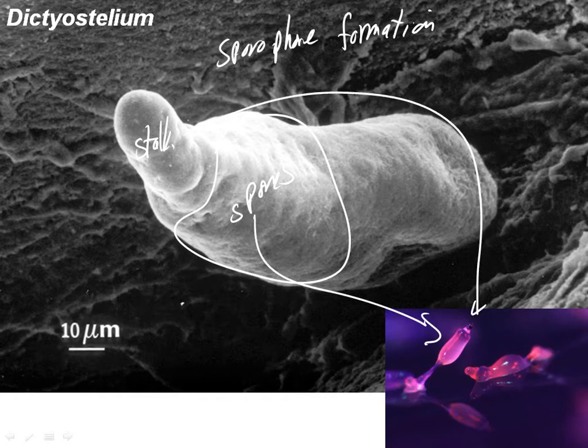And you kind of get the sense that those spores are kind of almost climbing up the stalk as the stalk is elongating. And there's a scale to give you how big that is. So the whole thing there is between 100 and 200 micrometers, a tenth, two tenths of a millimeter.